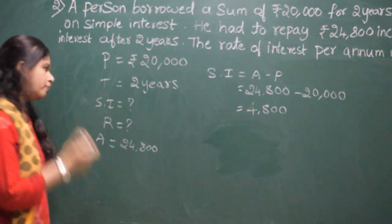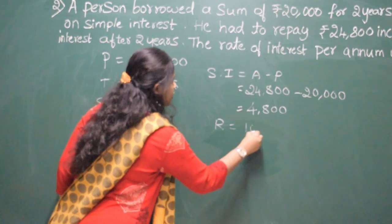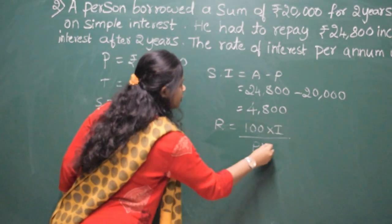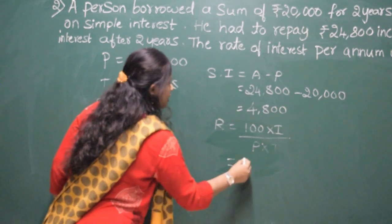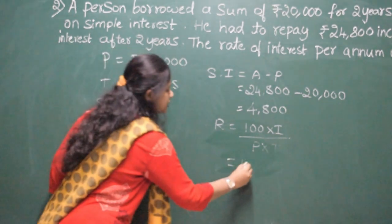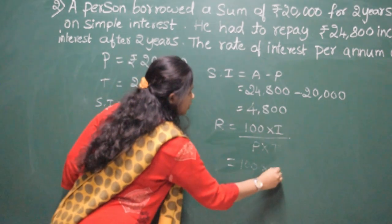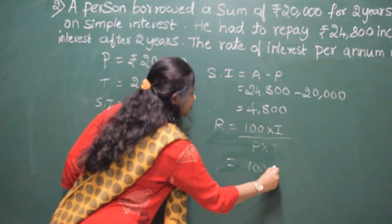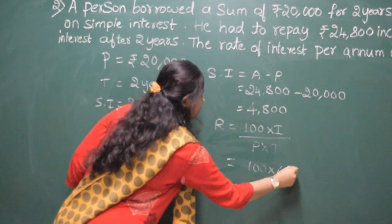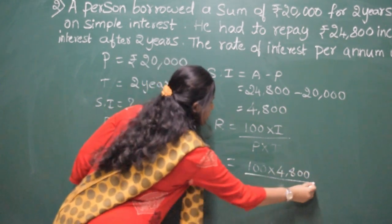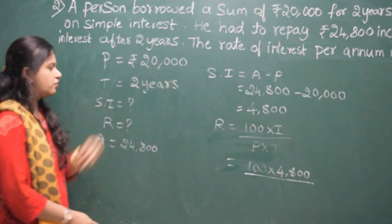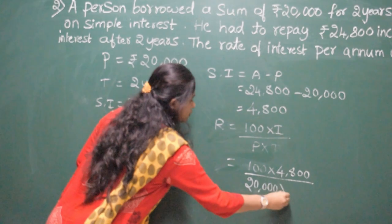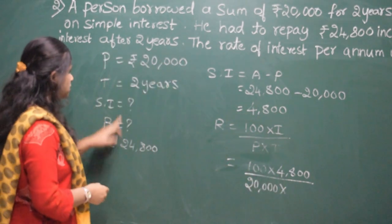You know about the rate formula. Rate is equal to 100 into interest divided by principal into time. So, 100 into interest. Interest is, we already solved, interest is 4,800. 100 into 4,800 divided by, what is the principal here? The principal is 20,000 into time. Time is 2 years.